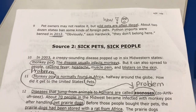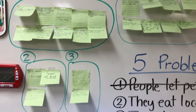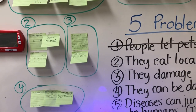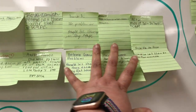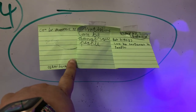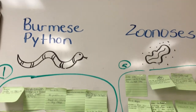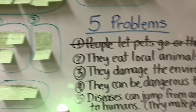We finished reading source two and looking for problems there, then finished taking notes for each source. I gave students a sticky note to write one problem that invasive species are causing from either source. The students put their sticky notes on the board and I grouped similar ones together. We identified problems including eating local animals, damaging the environment, being dangerous to people, and one about monkeypox and zoonotic disease — when diseases jump from an animal to a human.